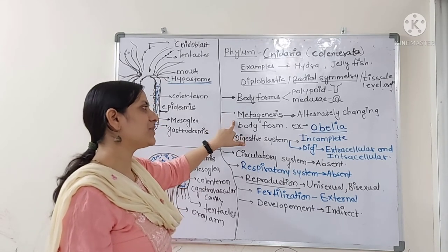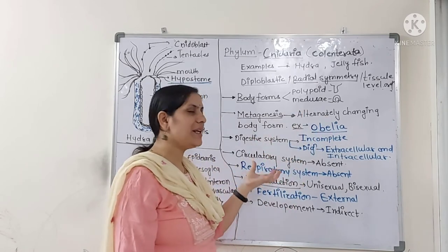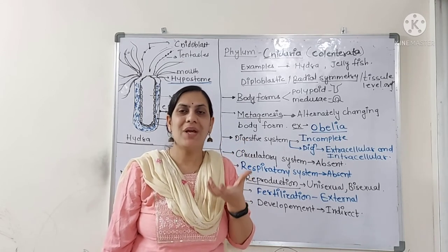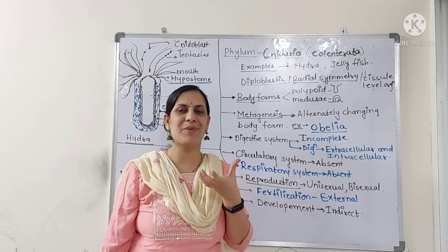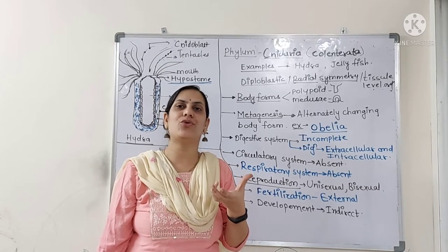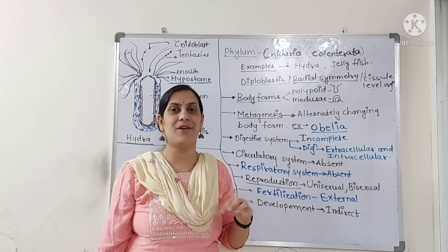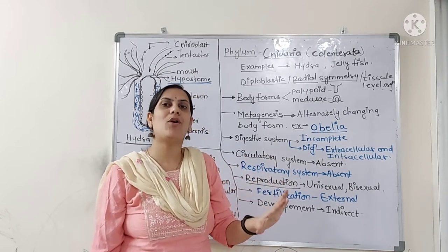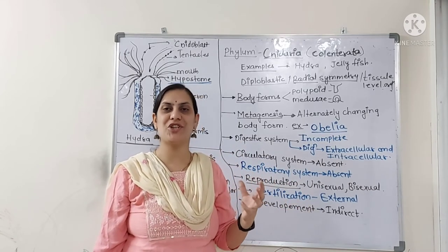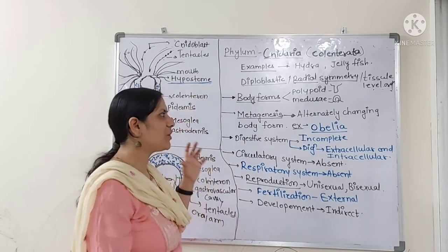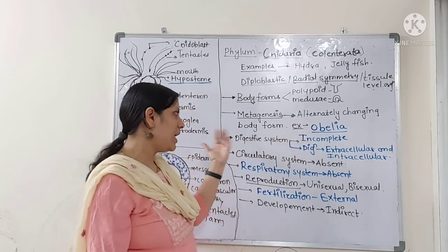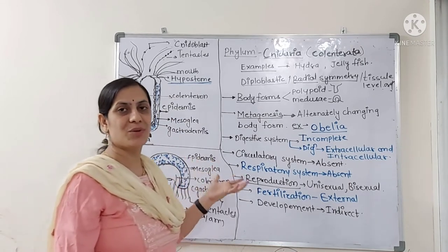Metagenesis is nothing but alternation of generations. Alternately, Obelia changes its body form. When in the polypoid form, this polypoid Obelia undergoes asexual reproduction to give rise to the medusoid form of Obelia. The medusoid form of Obelia undergoes sexual reproduction to form again the polypoid form. This alternating change of body form after each type of reproduction is called metagenesis, shown by Obelia.